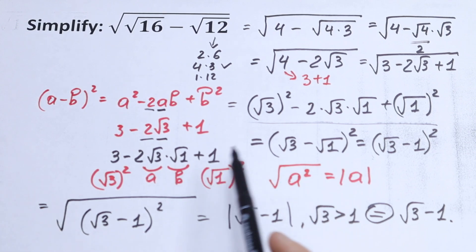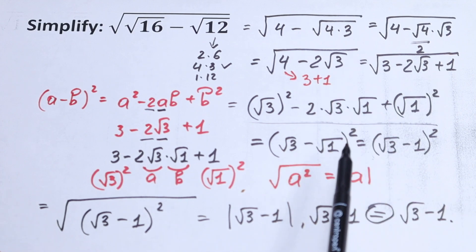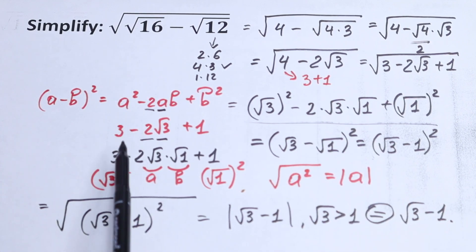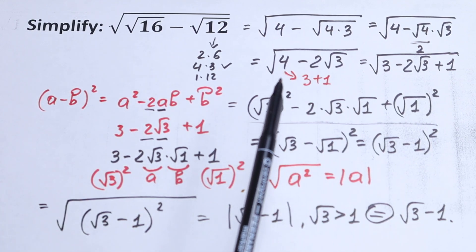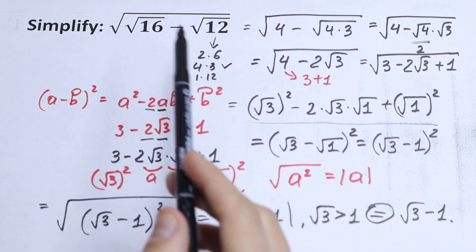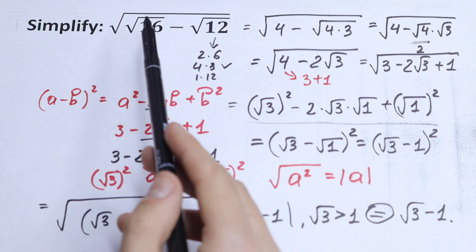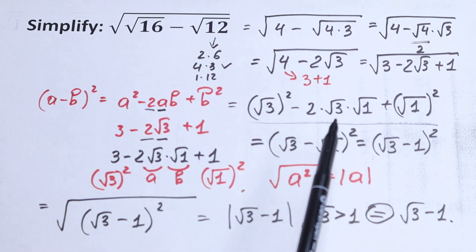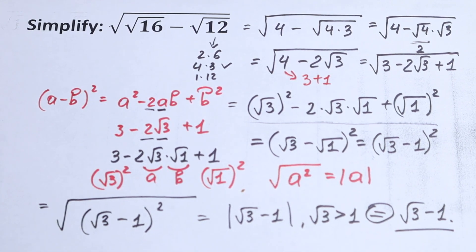I hope you understand this explanation — there is nothing hard here, just a little trick. We write 4 as 3 plus 1, and then step by step we create the perfect square formula. Of course, we cannot always apply this formula — for example, with the square root of 15 we would need a different method. Write a question or suggestion if you have any. Thank you so much for watching, subscribing, and putting thumbs up — I really appreciate it, and see you in the next videos.